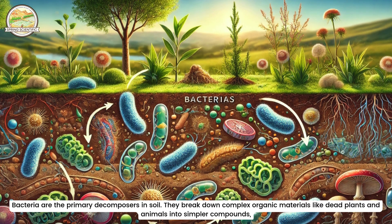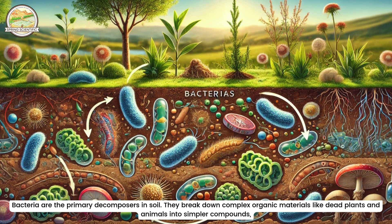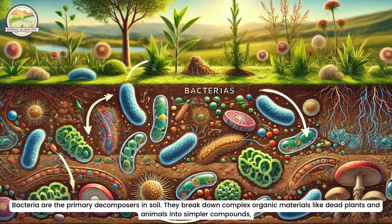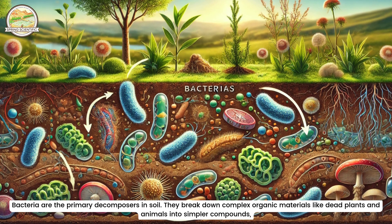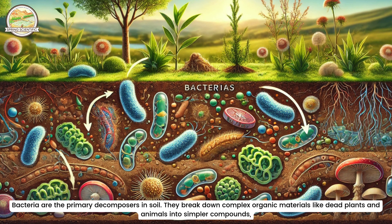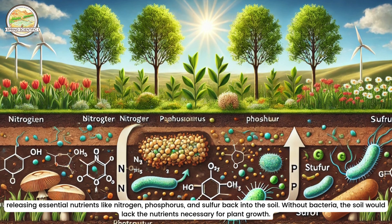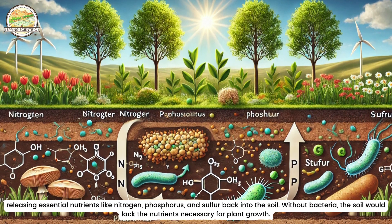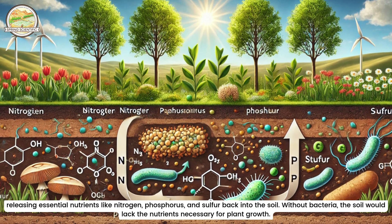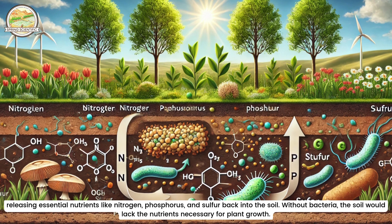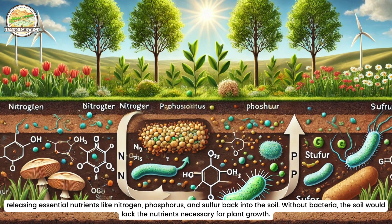Bacteria are the primary decomposers in soil. They break down complex organic materials like dead plants and animals into simpler compounds, releasing essential nutrients like nitrogen, phosphorus and sulfur back into the soil. Without bacteria, the soil would lack the nutrients necessary for plant growth.